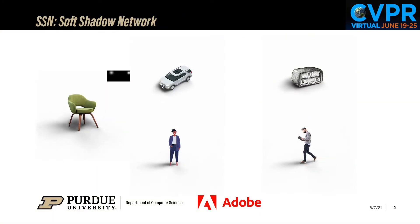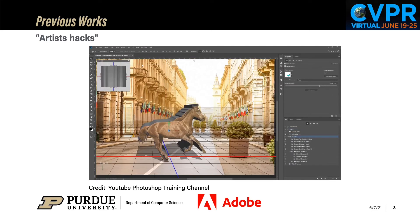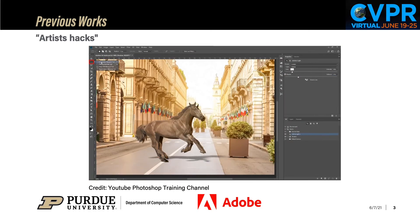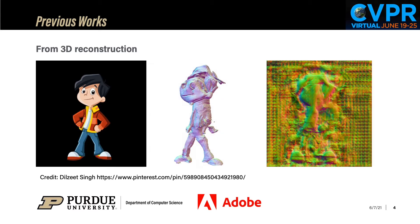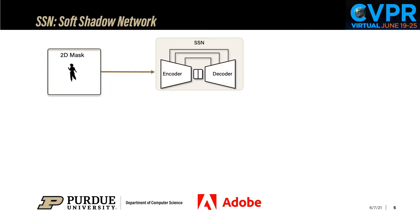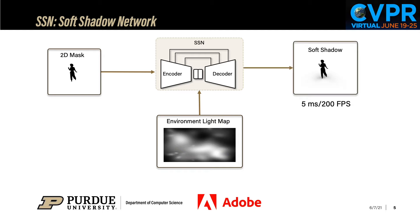We present SSN, a neural network for soft shadow generation in image composition. To drop soft shadows for composited images, artists either warp the original input and blur the boundaries, or use simple geometry to represent the object and do offline ray tracing to render the final soft shadows. Reconstructing 3D geometry from a single image is still very challenging due to the generalization issue. We propose a data-driven method, SSN, which takes an image cutout and an environment light map as inputs and renders realistic soft shadows for the cutout in real time.